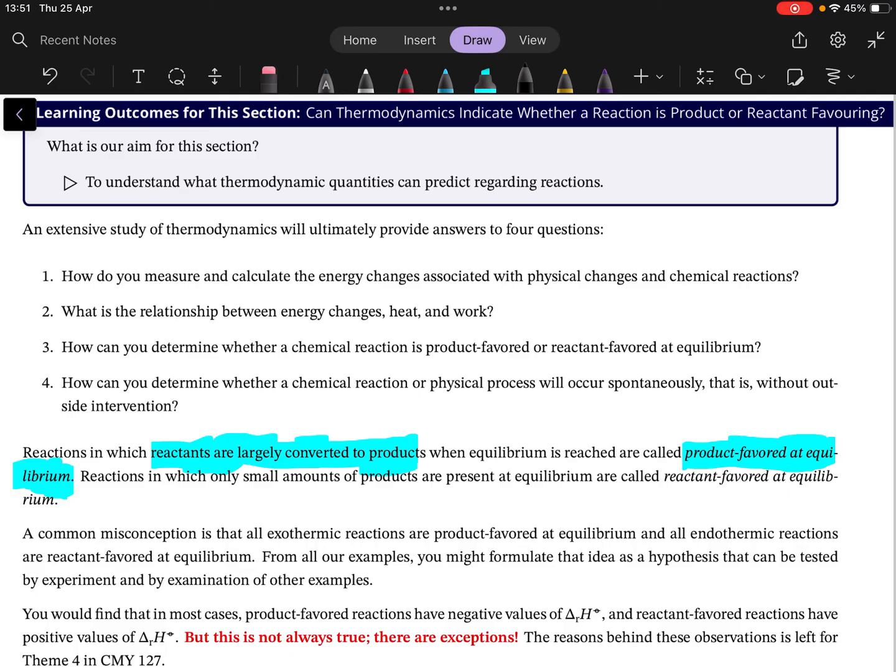In another way, then, of course a reactant favored equilibrium means that most of the reactants haven't reacted at all, so that we have a lot of reactants still left, and only a small amount of product. So it's reactant favoring. So that's what those things mean.